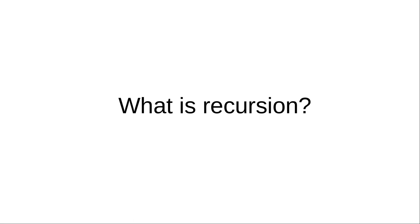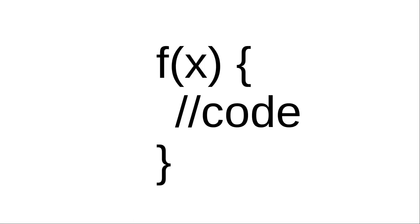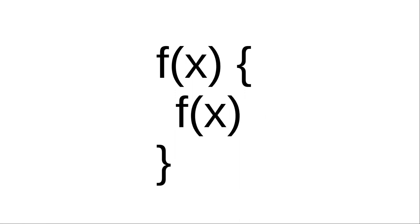Recursion is basically when a function is able to call itself. So imagine we have a basic function like this — we have an f and it has an argument x. If we at any point in that function called that function again, that is a recursive function. In most cases, you're going to see something like x minus 1 in the recursive call, because usually you want to change what arguments are passed to a recursive function every time. There are cases where you don't want to change the arguments, but that's pretty rare.